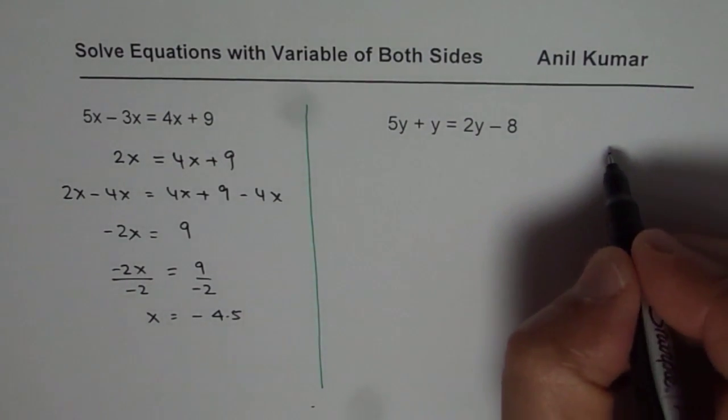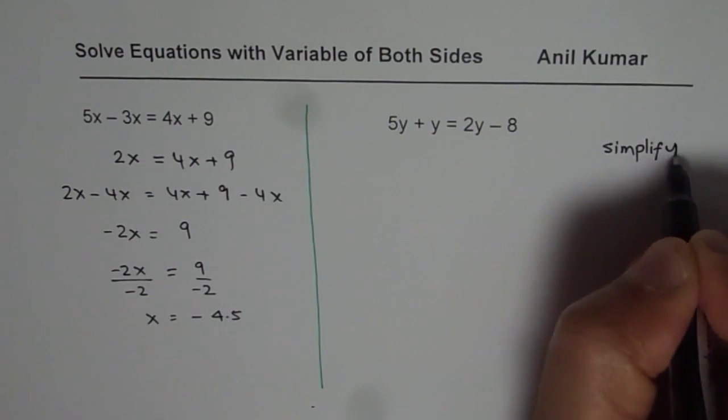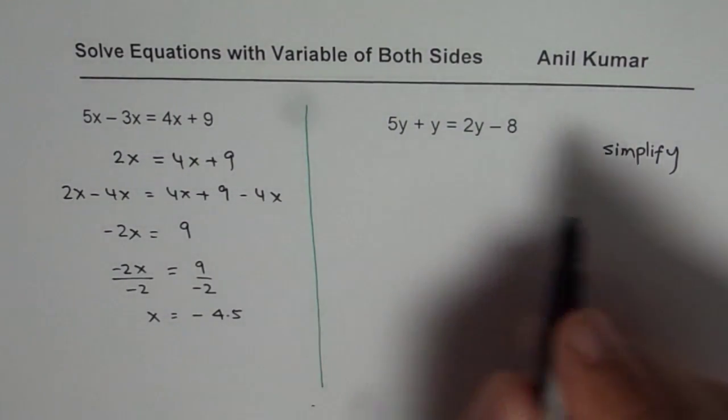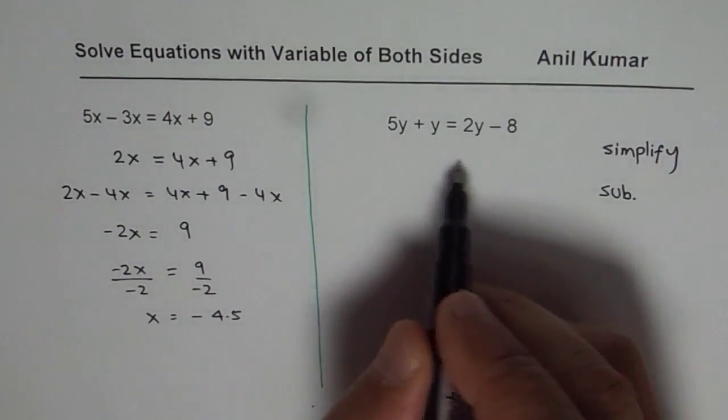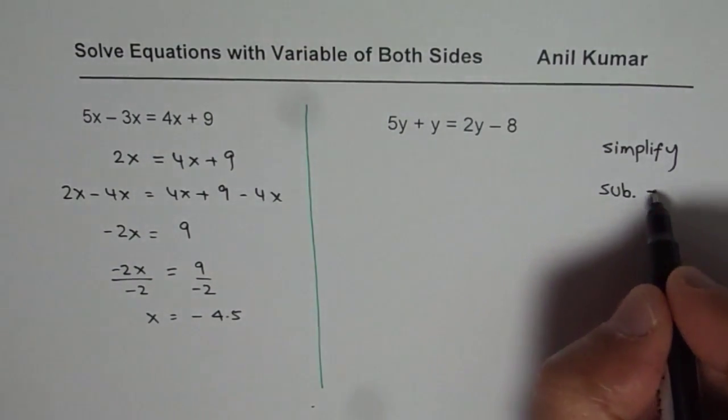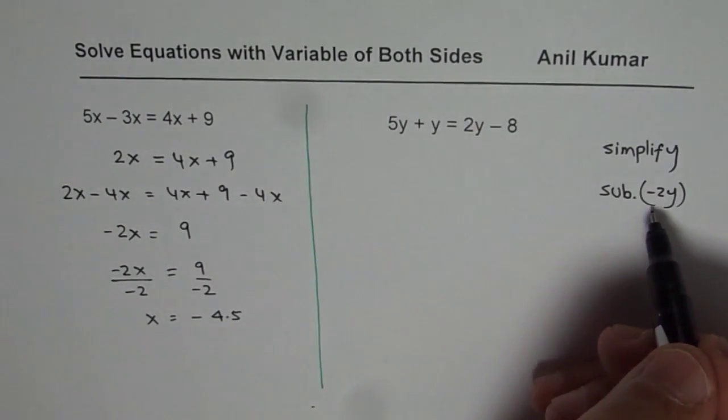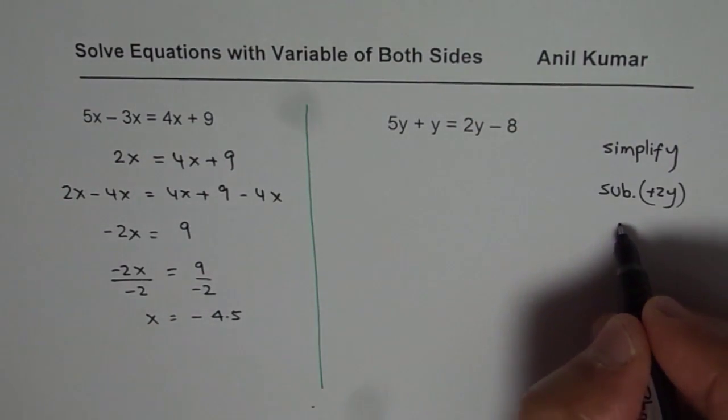First step is to simplify, right? So we will simplify, and once we simplify, we get equation with variables on both sides. Then we will subtract variables which will be minus 2y, right? I should write subtract 2y and then you simplify again.